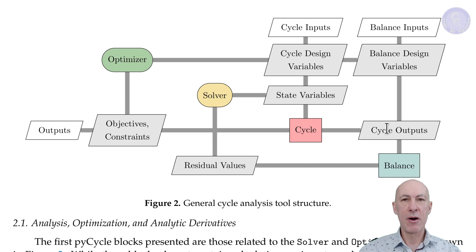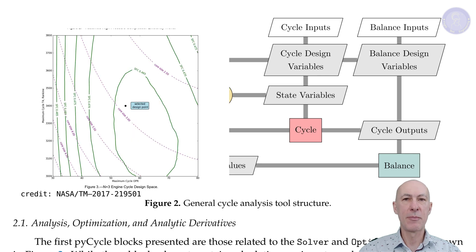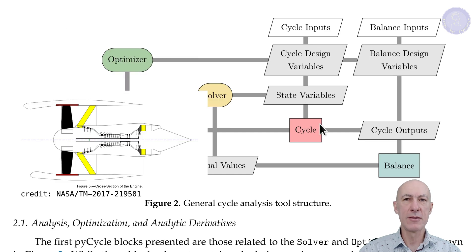The balance block checks whether the design meets the constraints of the engine. The solver finds an engine state that balances these equations in the design in the balance block. And this information is passed back to the optimizer, which uses it to propose a better set of design variables. And the process continues until the optimizer has found the best possible engine design.